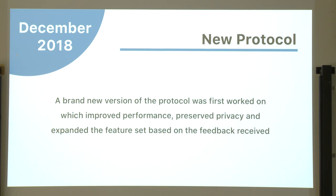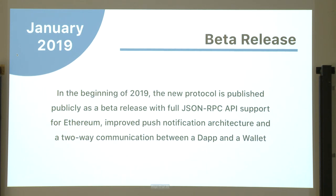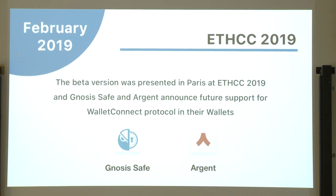Eventually we realized we needed a new protocol — it was really bad. A brand new version was designed to have improved performance, preserve privacy, and expand the feature set, because we had to break down what a dapp needs from a wallet and be flexible enough to support all wallets and all dapps. In January I released the beta, which kicked off adoption. It had full JSON-RPC support for Ethereum, an improved push notification architecture, and live two-way communication. At DCC I presented the beta version, and right after, Gnosis Safe and Argent announced they would support WalletConnect.